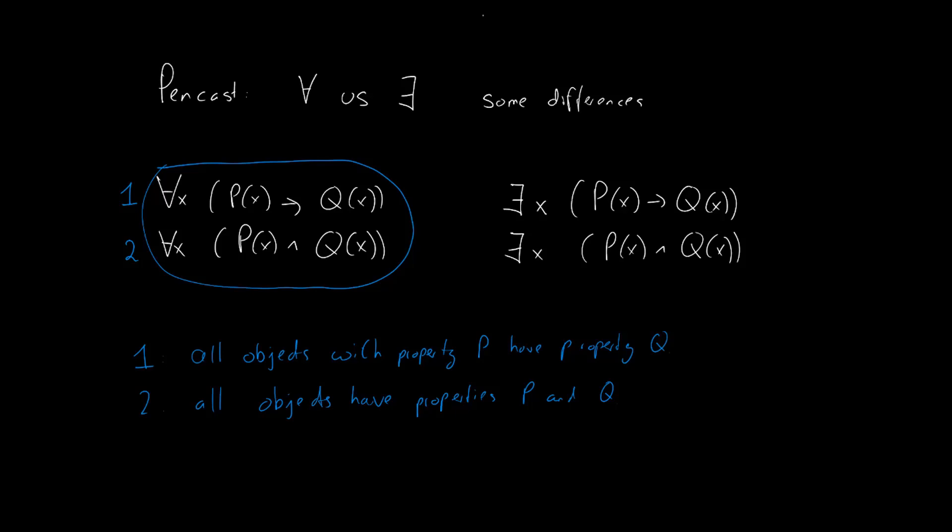Now let's take a look at these there exist statements. There exists an x so that px implies qx and there exists an x for which px and qx hold. The first one, the implication, says that there is an object such that if that object has property p then it also has property q.